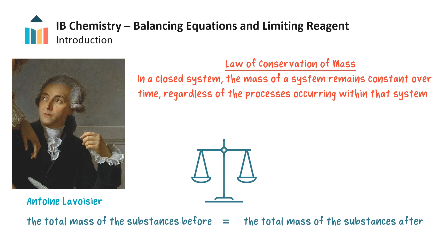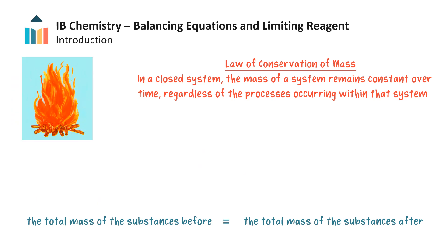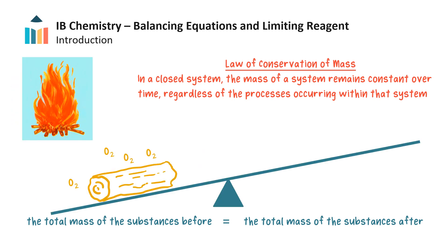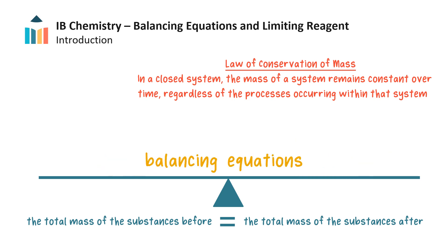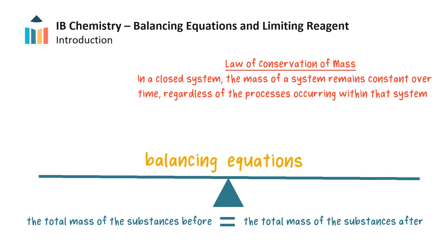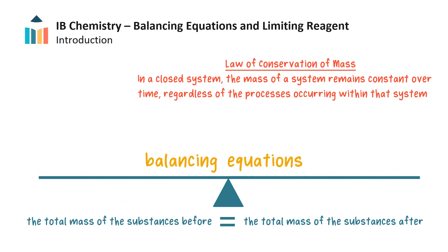As we learned about in chemical reactivity, the Law of Conservation of Mass is the basis for quantifying and tracking mass changes involved in a chemical reaction. If a log is burned, the mass of the carbon, hydrogen and oxygen atoms present in the chemical structure of wood, when combined with the mass of the oxygen atoms in molecular oxygen from the air, must equal the mass of the carbon dioxide, water vapour and ashes that are produced post-combustion. Understanding how to apply the Law of Conservation of Mass allows us to balance chemical equations and track the amounts of reactants and products through stoichiometry. These skills are the focus of this video.